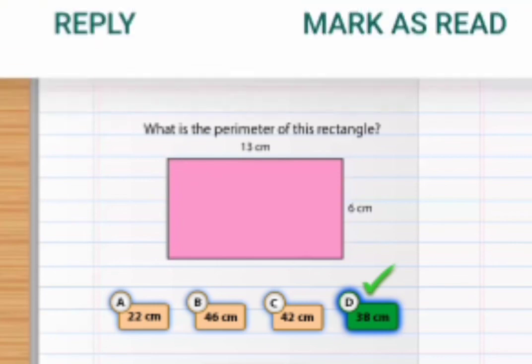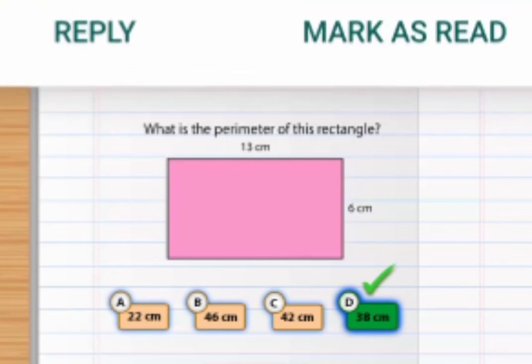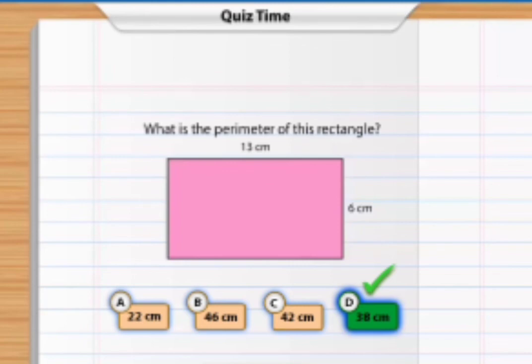So children, I hope you all learned how to find the perimeter of the given rectangle. One more time I'll recall all the formulas. We can use the normal formula: the perimeter equals sum of all sides. Or the perimeter of a rectangle equals 2 times length plus breadth. Dear children, I hope you all learned well. Thank you children.